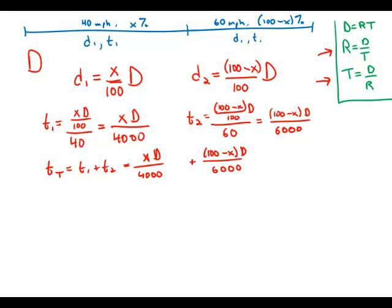Okay, I know this looks like a monstrosity, but this is not too bad. To find a common denominator of 4,000 and 6,000 turns out is relatively easy. It's just 12,000. That's the least common denominator. So all I have to do is multiply this one by 3 over 3 and this one by 2 over 2. And so then I get common denominator of 12,000, and in the numerator, I get 3X D.